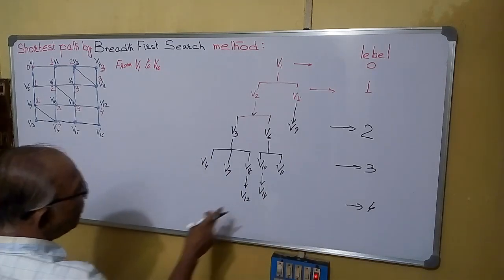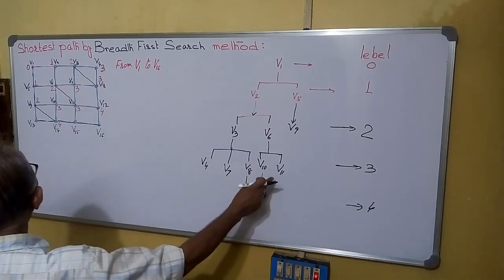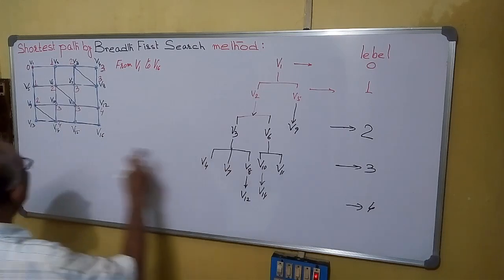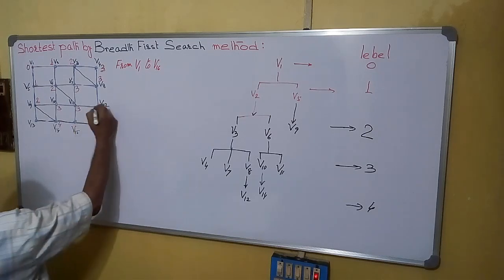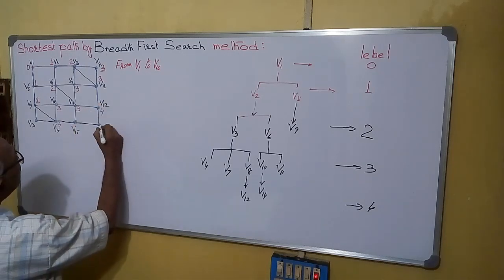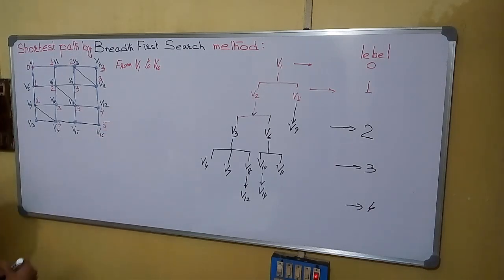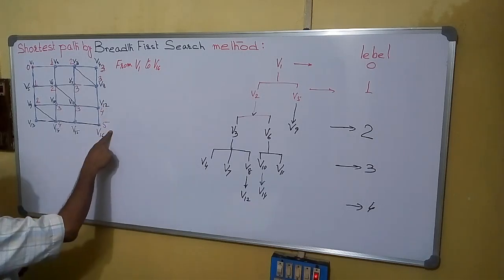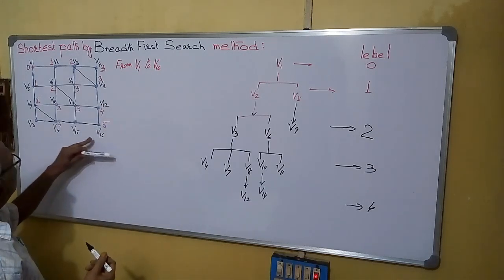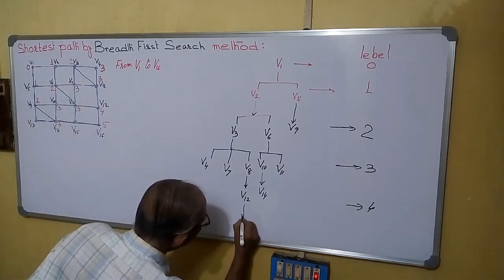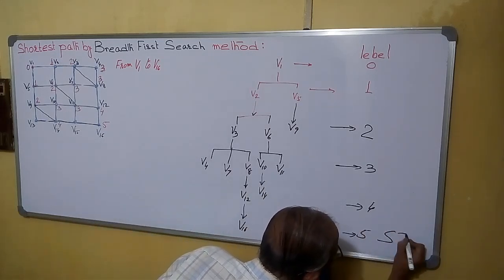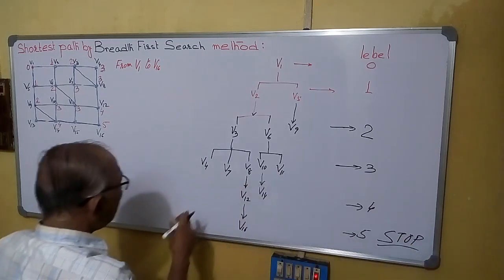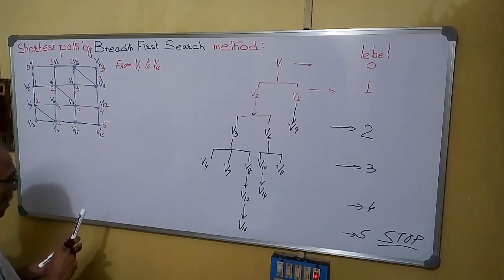So now V12. So next is V12. From V12 we can go to V16. V16 and its marked as 5. Our destination was V16. Once it reaches we will stop the process. V16 we are going from V12. From here we are going to V16 marked as 5. And the process is stopped. When we reach V16 the process is stopped.